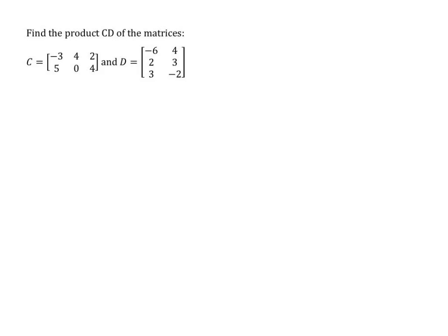Let's find the product of C times D. So here we have a 2 by 3, and we're going to multiply it by 3 by 2. So these items are the same, so we're able to multiply. Our resulting matrix will be a 2 by 2.